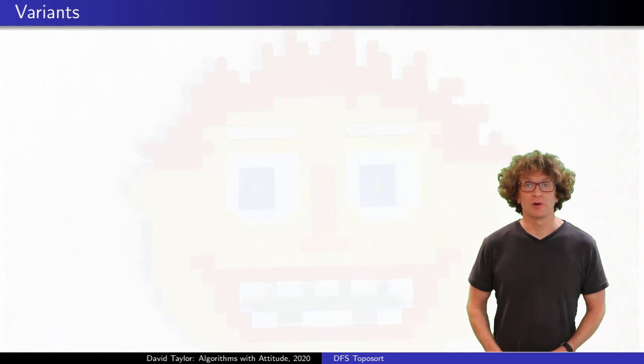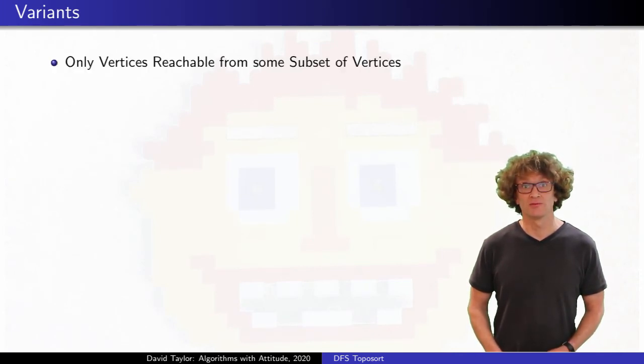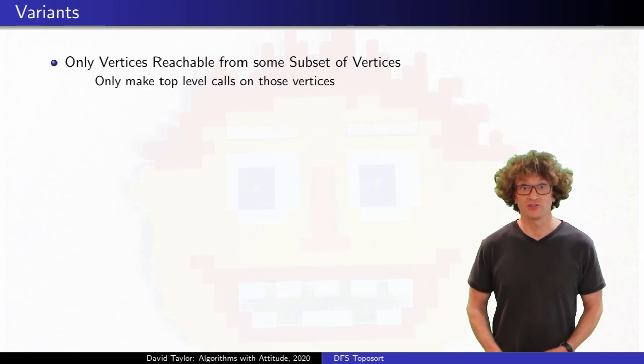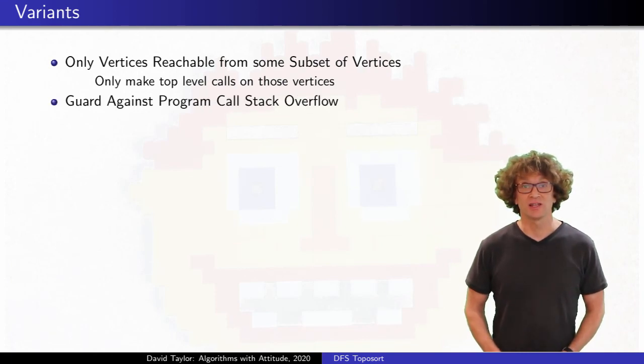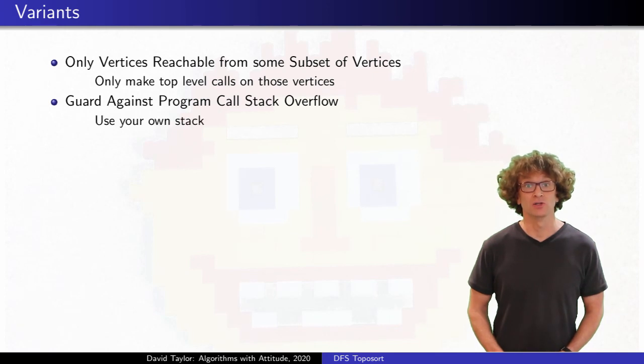We can consider a few simple variants. If you only want to consider vertices reachable from a subset of vertices, maybe just one vertex, modify the top level depth first search to only search from that subset or that one vertex. The recursive part doesn't change. Also, just like in depth first search, if your graphs contain long enough paths, you might have to worry about stack overflow problems. In that case, you might want to use your own stack for a non-recursive version of depth first search.